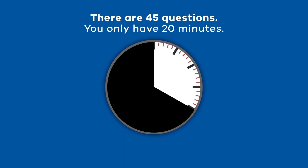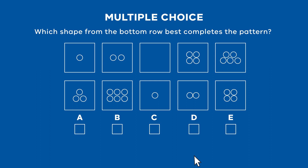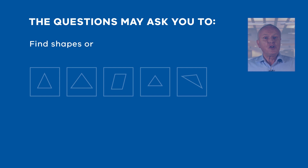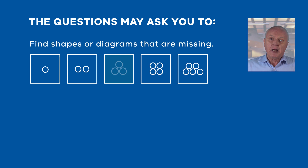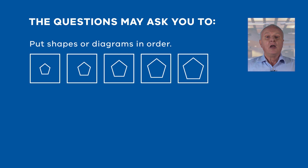You'll need to click on the box next to the correct answer. Only one answer is right. With multiple choice, it's a good idea to eliminate answers you know are wrong straight away. You won't be penalised for getting the wrong answer, so make sure you have a go and click on an answer even if you aren't 100% certain. The questions in the abstract reasoning test may ask you to find shapes or diagrams that are alike or different, find shapes or diagrams that are missing, put shapes or diagrams in order, or find shapes that complete a pattern.